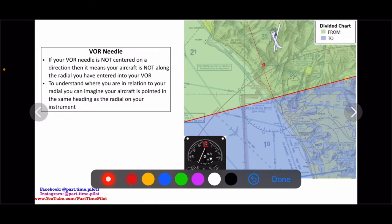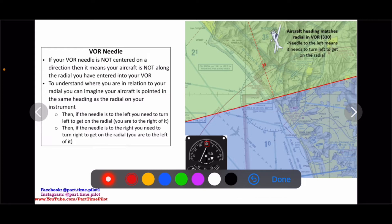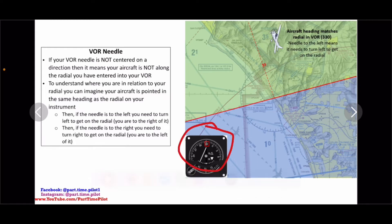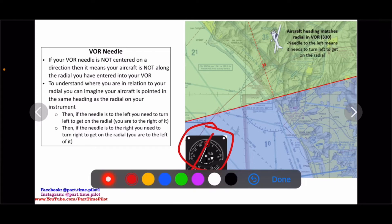If we have 330 dialed into our VOR, for the needle to be centered our aircraft has to be on 330 or its opposite line of 150. If not, the VOR needle will not be centered. To understand where you are relative to your radial, imagine your aircraft is pointed in the same heading as the radial on your instrument. If the needle is to the left, you need to turn left to get on the radial. In this picture our needle is off-centered to the left.